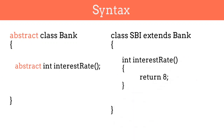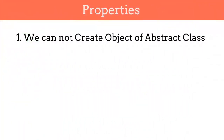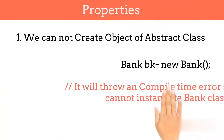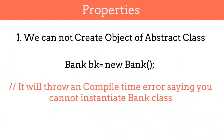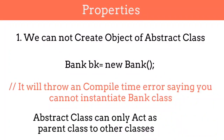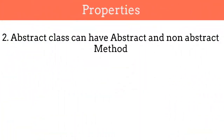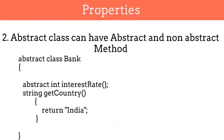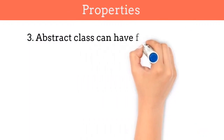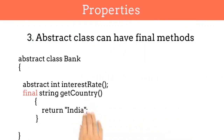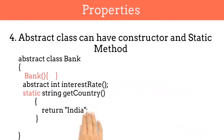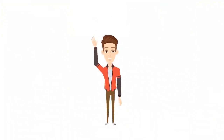Now let's see some properties of abstract class. First, we cannot create an object of abstract class because the definition of some methods might be missing — this class will only act as a parent class to other classes. Second, an abstract class can have both abstract and non-abstract methods, meaning along with abstract methods we can also write methods that have a definition. Third, an abstract class can have final methods. You can check out my video on the final keyword for more information. Lastly, an abstract class can have constructors as well as static methods. That's it for today's video — if you like this video, please subscribe to my channel. Thank you for watching.